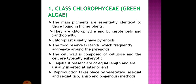First class: Chlorophyceae, also known as green algae. The main pigments are essentially identical to those found in higher plants — chlorophyll A, B, carotenoids, and xanthophylls. Chloroplasts usually have pyrenoids. The food is reserved as starch which frequently aggregates around the pyrenoids. The cell wall is composed of cellulose and the cells are typically eukaryotic. Flagella, if present, are of equal length and usually inserted at the anterior ends. Reproduction takes place by vegetative, asexual, and sexual methods.